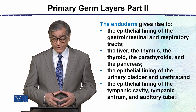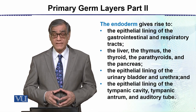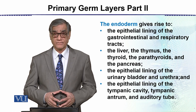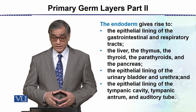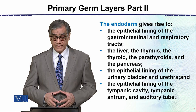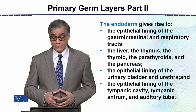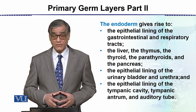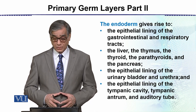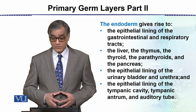The endoderm gives rise to the epithelial lining of the gastrointestinal and respiratory tract, then the liver, the thymus, the thyroid and the parathyroid — they are all endodermal in origin — as well as the pancreas and the epithelial lining of the urinary bladder and the urethra.